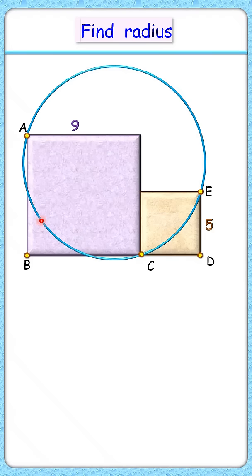This amazing question. Can you find the radius of this blue circle where given are two squares with side length 9 and 5 centimeters? Let's check the solution.